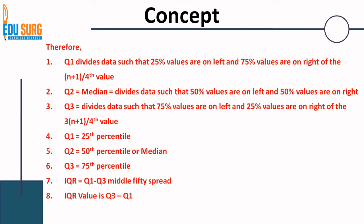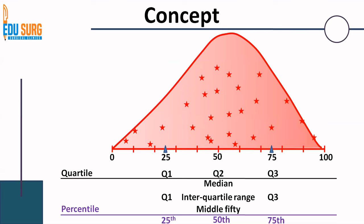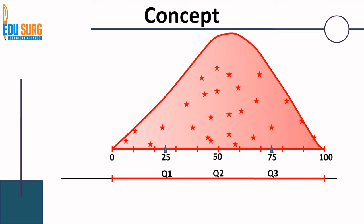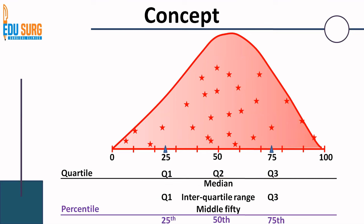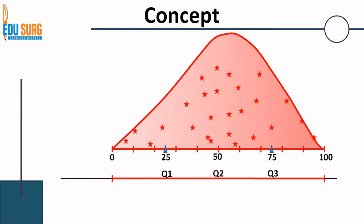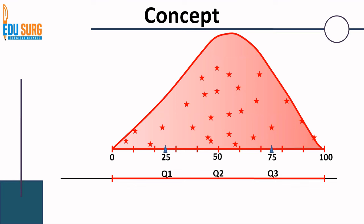Box plots are very important to understand because they are very routinely used in the current statistical world. If you understand this concept, it is going to be very easy. What we are going to do is take our line below the Q1, Q2, Q3. Once you have your Q1, Q2, Q3 values, remove your data line and just put a box where Q1, Q2, and Q3 are summarized. We want to get rid of the curve and create values in a way that the data can be represented very simply.